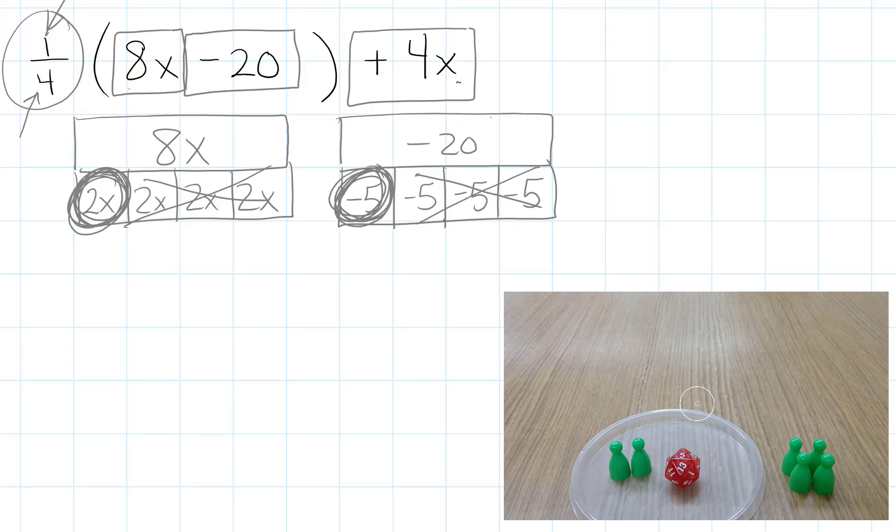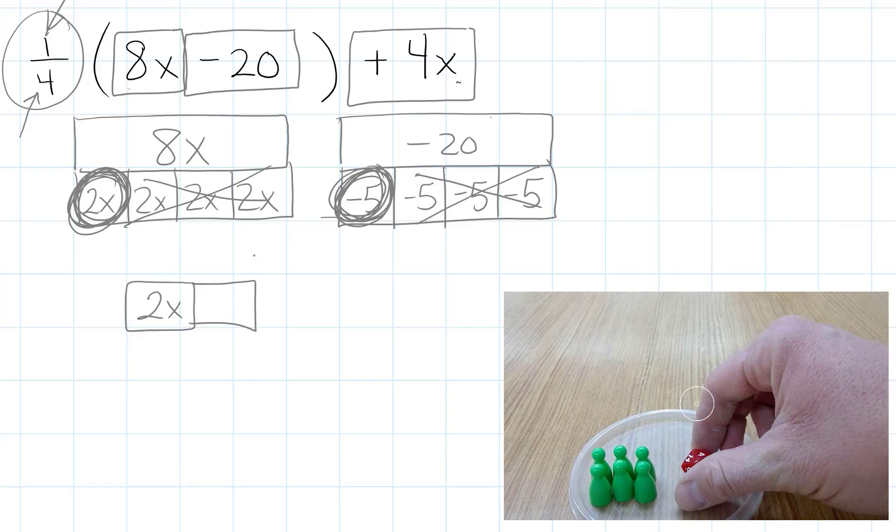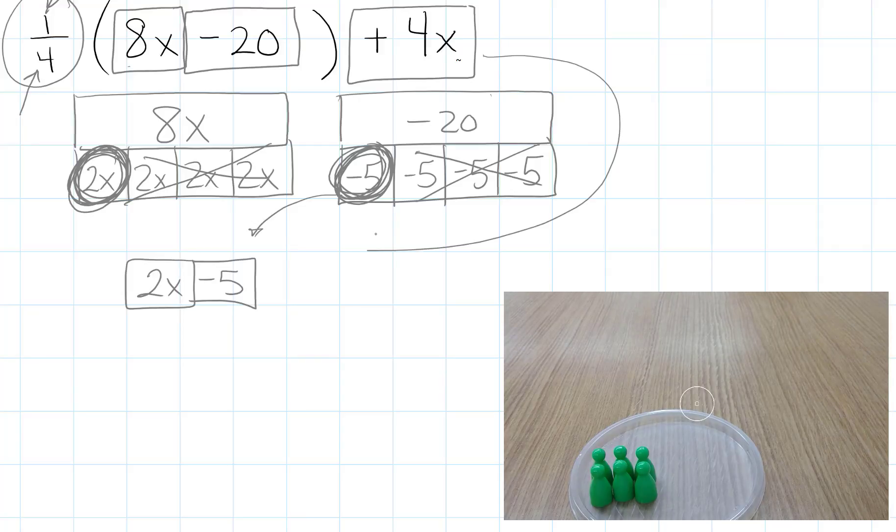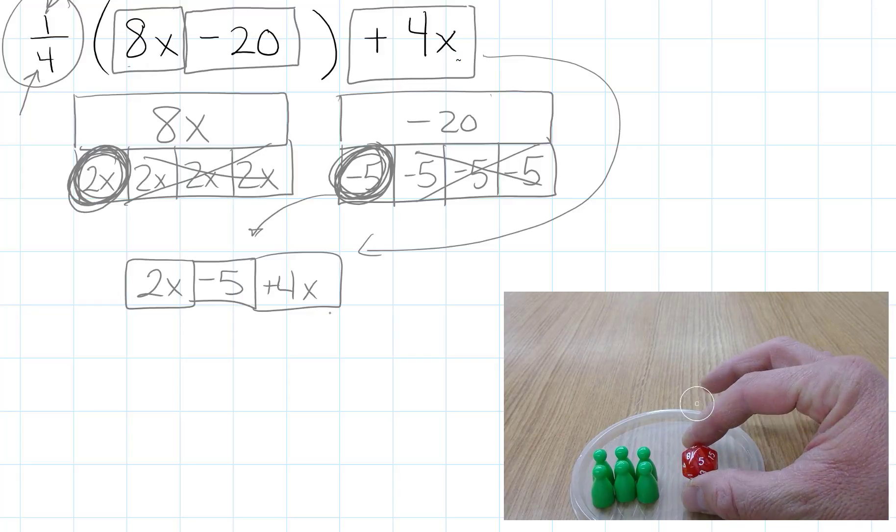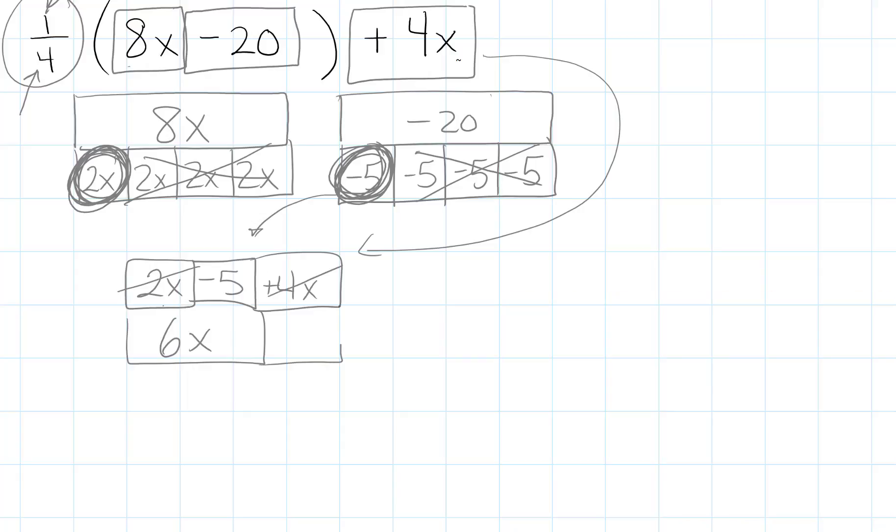And now what's left is I have a 2x. I have a negative 5. And then we still have the 4x's from up above. So I have 4 positive x's that I'm going to put with this. And when we rearrange it and put our terms together, 2x and 4x can go together. And that's going to give us 6x's. And then we still have a negative 5. And so our expression is going to end up being simplified as 6x minus 5.